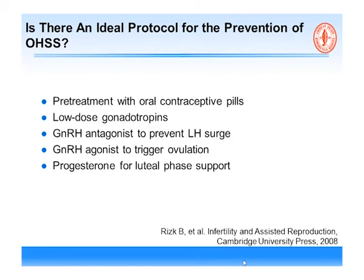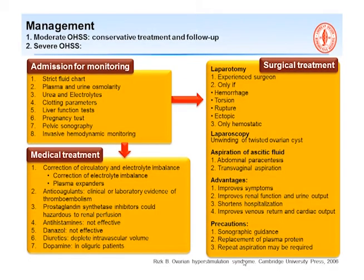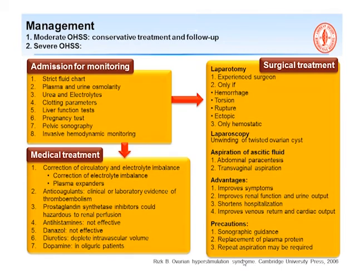For management, when the patient arrives in your emergency room with ascites: there is monitoring, medical treatment, and surgical treatment. Monitoring involves checking fluid input and output, and the three key lab groups — liver function, kidney function, and hematology. If a patient is highly hemoconcentrated she usually needs fluid. Do an HCG level and ultrasound. Invasive hemodynamic monitoring is very rarely used now.